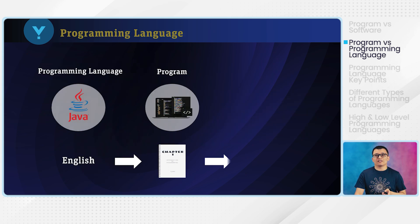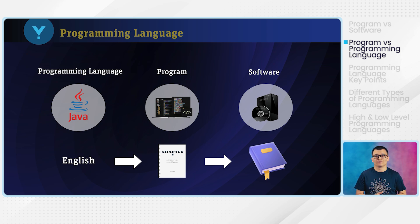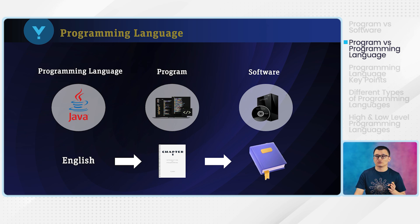Here is an example which can help you visualize and understand what a programming language is. If English is a programming language, then a chapter of a book written in that language can be considered a program. And the whole book itself — composed of a bunch of chapters — can be called software. Basically, software includes everything, not only the program, but also the documentation and any other resources used to create it.